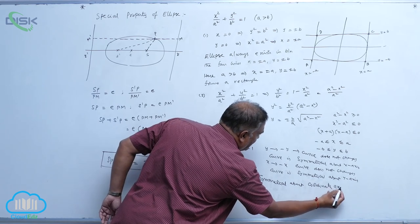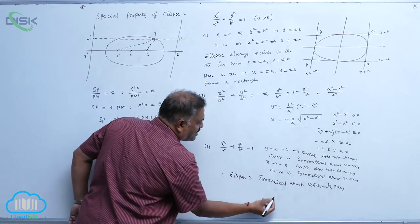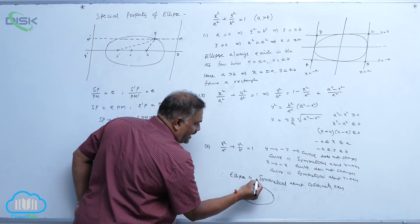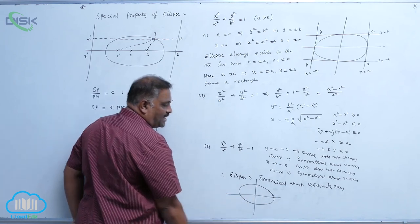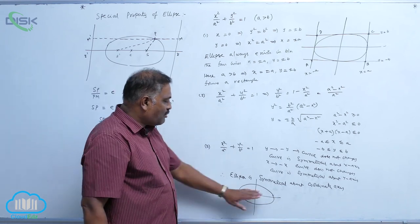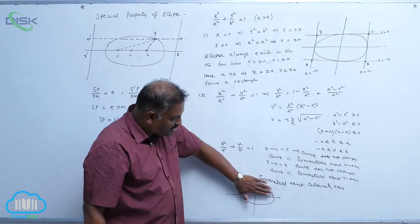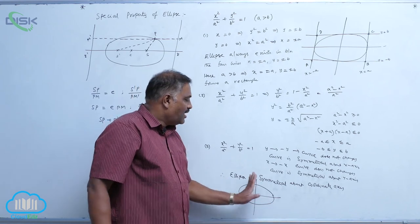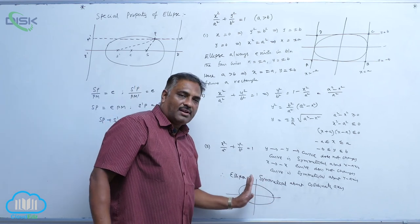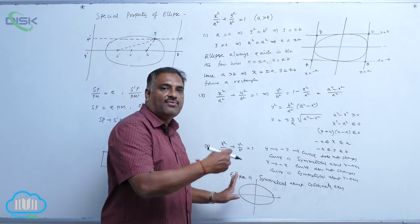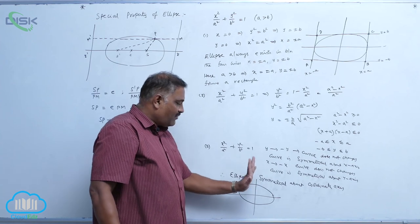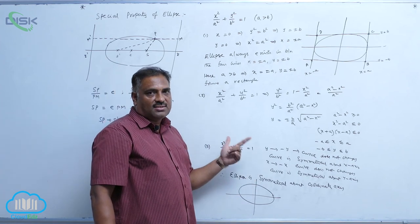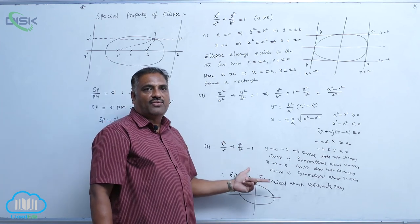For this reason, the ellipse always exists in all four quadrants. Above the x-axis and below the x-axis, the same amount of curve is there. On the right-hand side of the y-axis and the left-hand side of the y-axis, the same amount of curve is present.